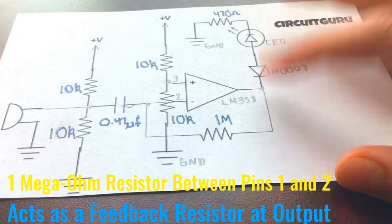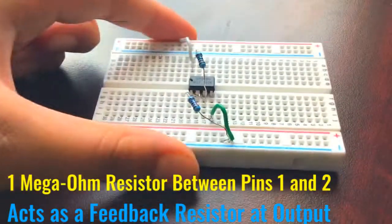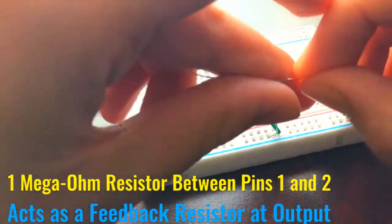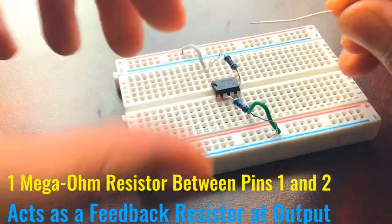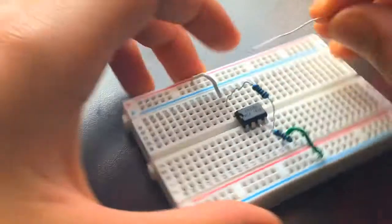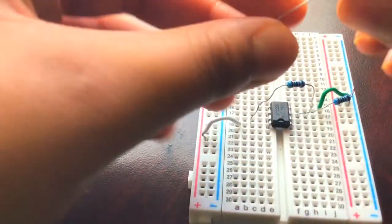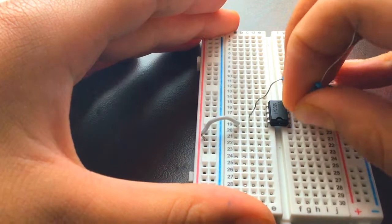We're going to take a 1 mega ohm resistor and place it between the inverting input and the output. We're going to place it on pin 2, which is the inverting input, and we're going to place it also on pin 1.